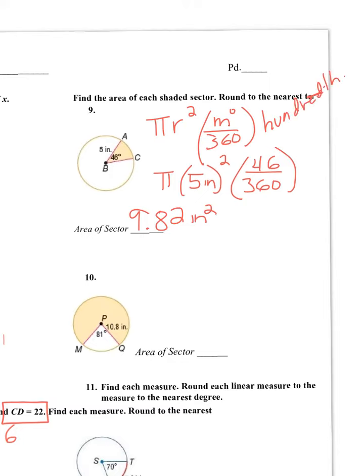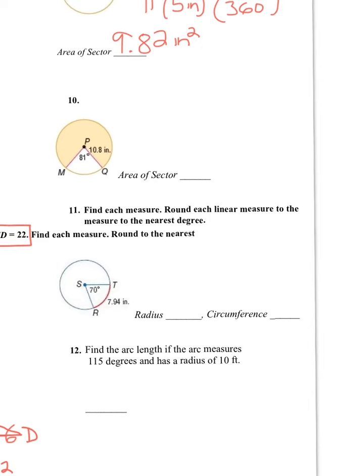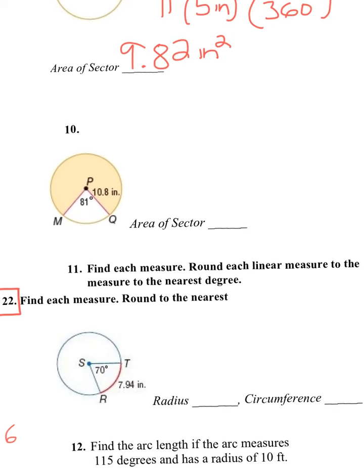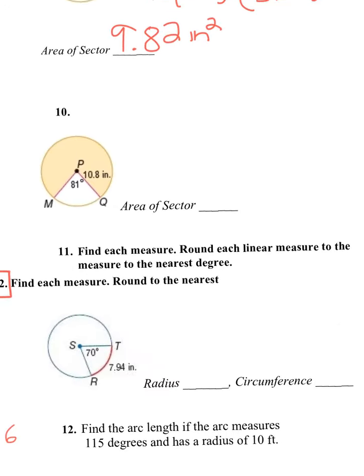Okay, now problem number 10. In number 10, it says find the area of the sector. Well, this is a special one because, see, the whole circle is 360, the whole circle. But they don't want the whole circle. They just want that shaded region. So out of 81 degrees, well, the first thing you need to do is subtract 360, subtract 81 degrees, and that gives you 279 degrees.